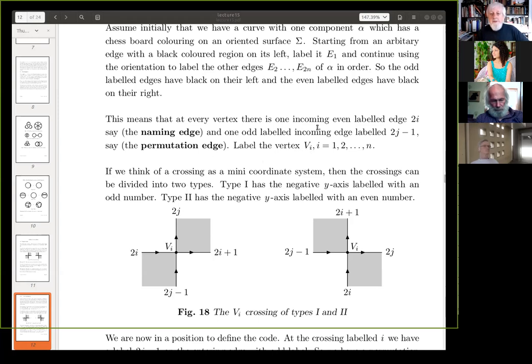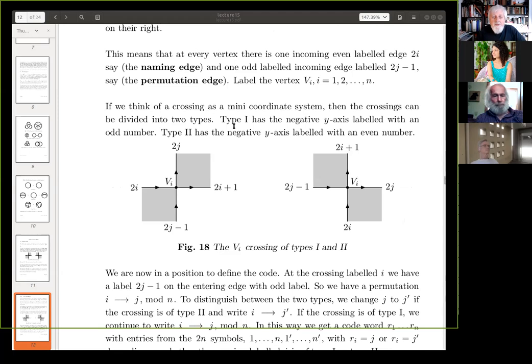This means that every vertex, there is one incoming even labeled edge, 2I say, and that's called the naming edge. And one odd labeled incoming edge labeled 2J minus one. And we'll call that the permutation edge. Label the vertex VI. Okay. So the even labeled edge, which enters names the vertex. Okay. If we think of a crossing as a mini coordinate system, then the crossings can be divided into two types. Type one has the negative Y axis labeled with an odd number. Okay. And that has, what I say is this is colored, darkly colored on the left. And of course it switches over when it crosses and the dark labeled regions on the right. And then it's the other way around for type two. Okay.